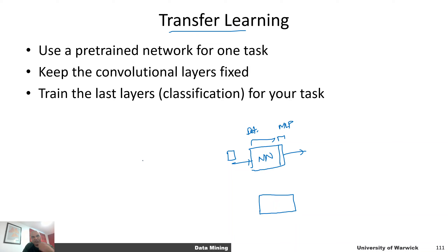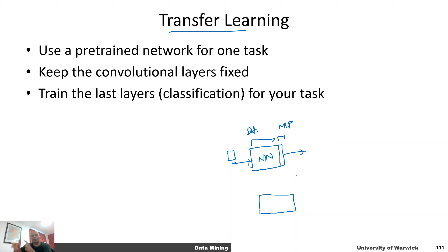Training with transfer learning looks like this: say you want to detect Waldo but you already have a trained neural network for detecting persons. You keep most of that neural network fixed and train only the classification layers or a few convolution blocks at the end. I'll be posting links on how this can be done in PyTorch or Keras — it's really simple. The idea is to use a pre-trained network for one task, keep the convolution layers fixed, and train the last classification layers for your own task. You're free to change them as you see fit.